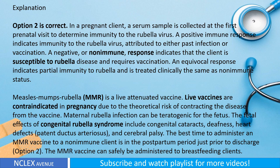Explanation: Option two is correct. In a pregnant client, a serum sample is collected at the first prenatal visit to determine immunity to the rubella virus. A positive immune response indicates immunity attributed to either past infection or vaccination. A negative or non-immune response indicates the client is susceptible to rubella and requires vaccination. An equivocal response indicates partial immunity and is treated clinically the same as non-immune status. The MMR vaccine is a live attenuated vaccine; live vaccines are contraindicated in pregnancy due to the theoretical risk of contracting the disease from the vaccine. Maternal rubella infection can be teratogenic, with fetal effects of congenital rubella syndrome including congenital cataracts, deafness, heart defects, patent ductus arteriosus, and cerebral palsy. The best time to administer the MMR vaccine to a non-immune client is in the postpartum period, just prior to discharge; the MMR vaccine can safely be administered to breastfeeding clients.